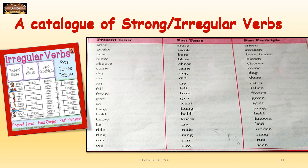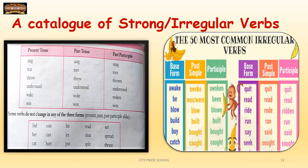This brings us to the end of Part 1 on verbs. In this part, we have dealt with what verbs are, the different types of verbs, and in detail with main verbs and the different kinds of main verbs — that is, regular and irregular verbs. A catalogue of regular and irregular verbs has been attached, which you are supposed to write in your English grammar notebook. Soon we are going to proceed with verbs and the different kinds of verbs. Thank you.